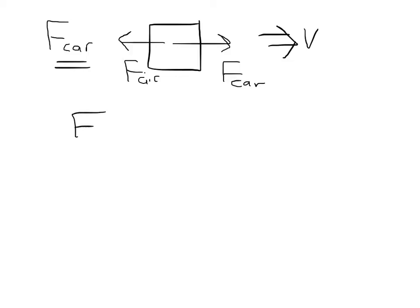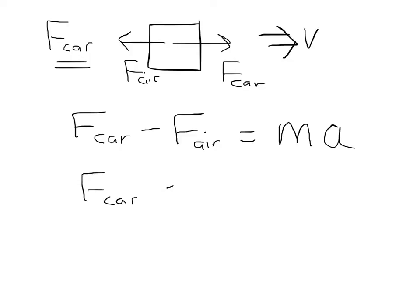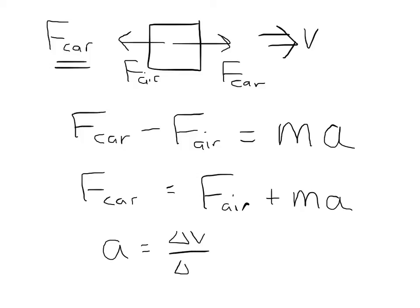The force produced by the car minus the force due to air resistance equals the net force, which equals mass times acceleration. The acceleration is the change in velocity over time. Since it's constant, and at the end of 10 seconds the car has reached 40 meters per second, the acceleration is 40 meters per second divided by 10 seconds, which is 4 meters per second squared.